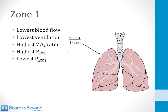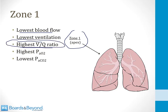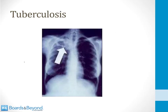Zone one — the apex — has the lowest blood flow and lowest ventilation but the highest VQ ratio, giving the highest PaO2 and lowest PaCO2. Because PaO2 is so high in the apex, oxygen-loving bacteria like tuberculosis often develop infection there. A chest X-ray showing a cavitary tuberculosis lesion at the apex of the right lung illustrates this point — tuberculosis favors this location because of the high VQ ratio and high PaO2.